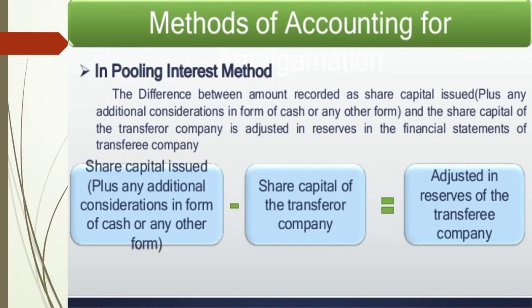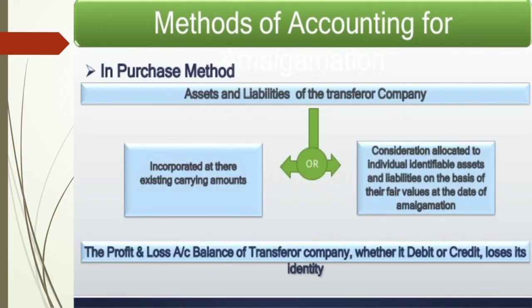In the purchase method, the assets and liabilities of the transferor company are first incorporated at their existing amount. Alternatively, the consideration is allocated to individual assets and liabilities on the basis of their fair value at the date of amalgamation — that is, market value or book value, whichever is higher, is considered for allocation.